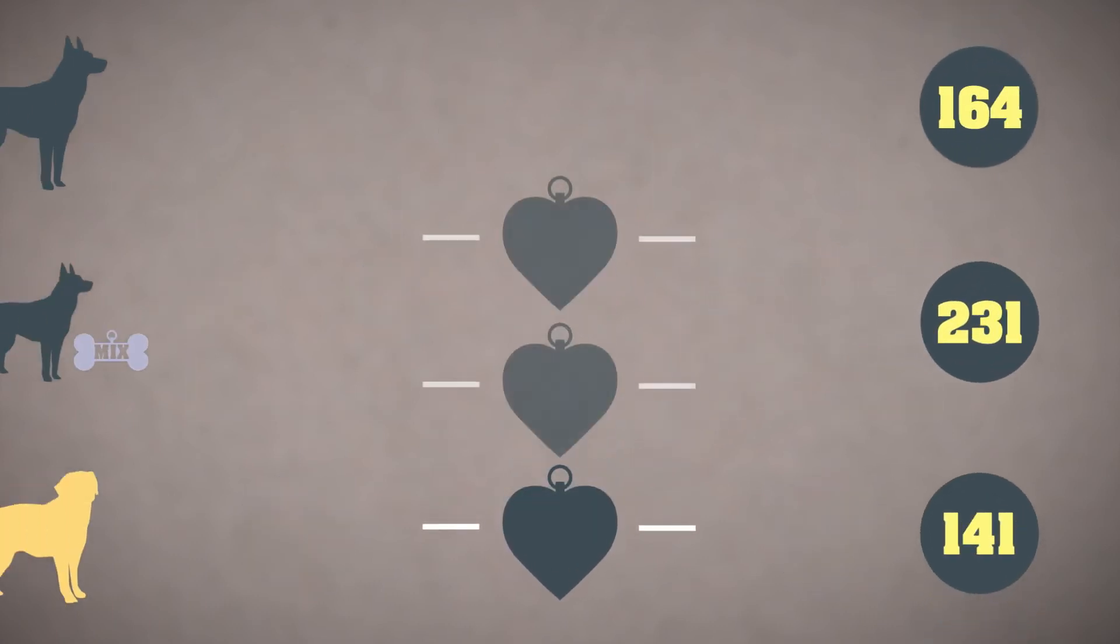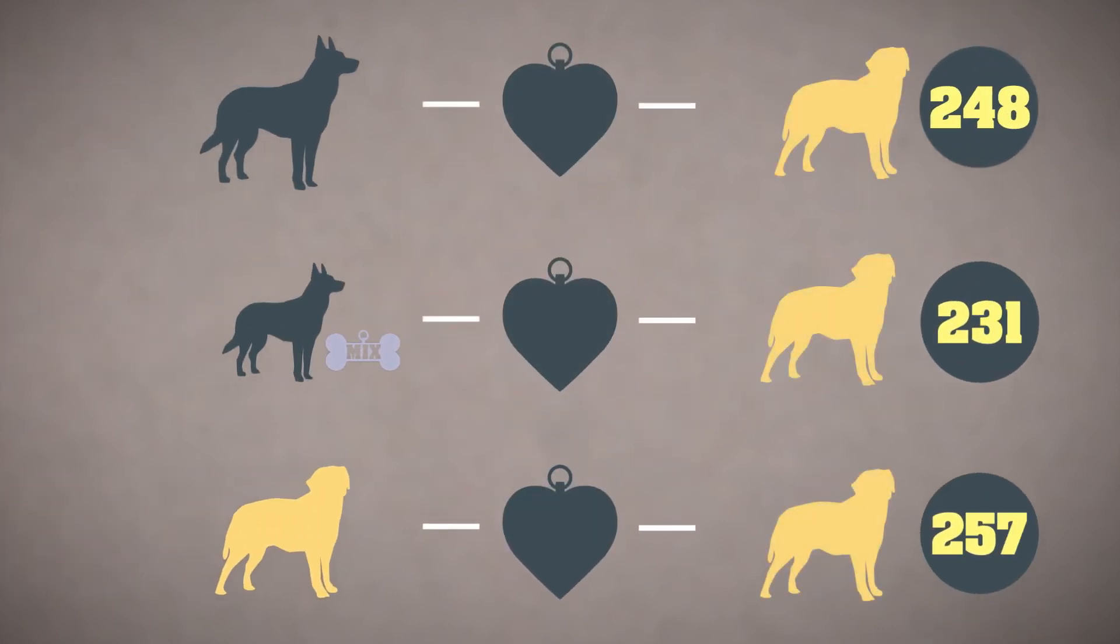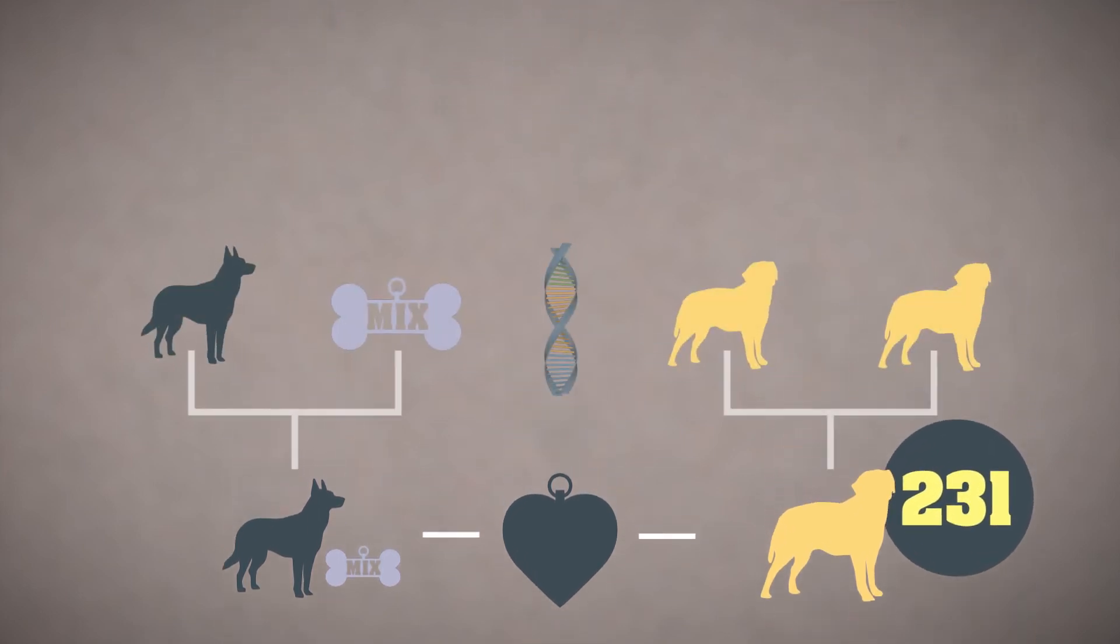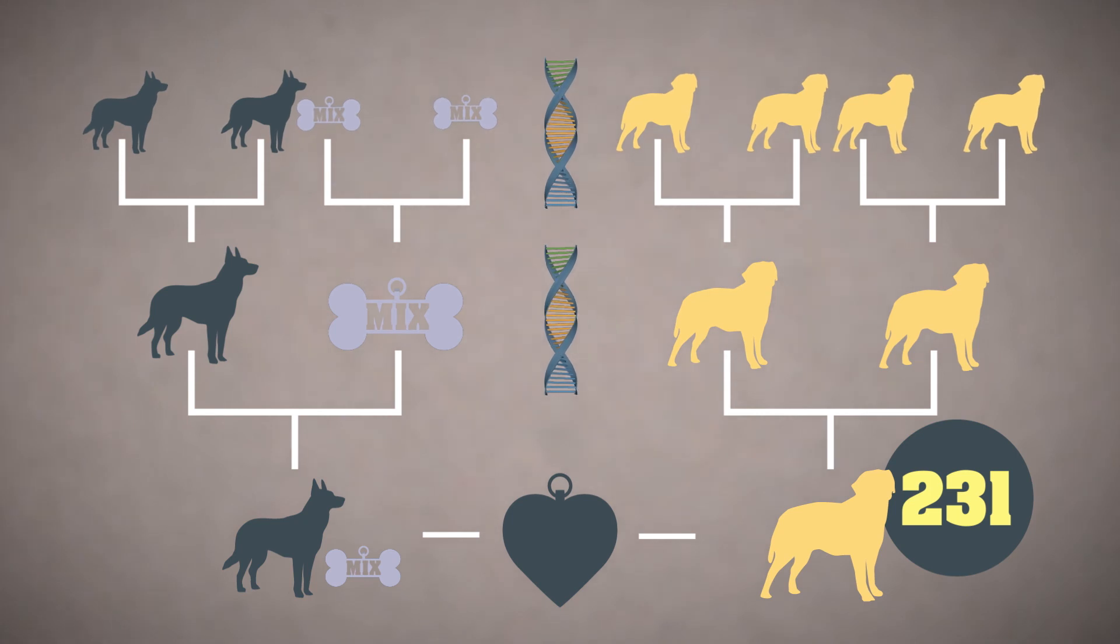The computer assigns each tree a score representing how well it matches your dog's data. The tree with the best overall score is determined to be the best representation of your dog's ancestry.